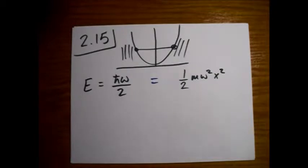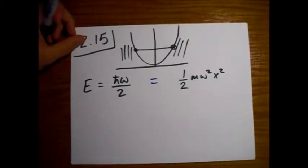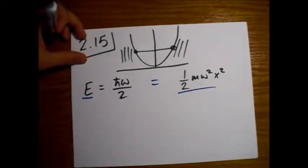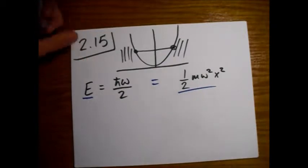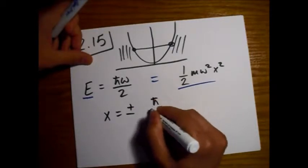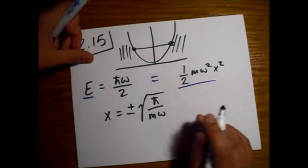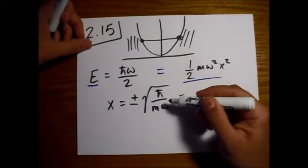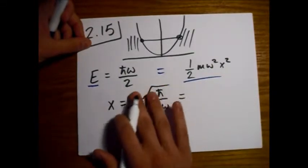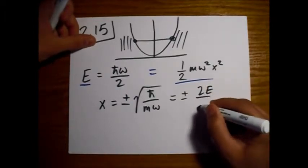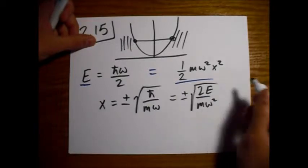The hint Griffiths gives us is to set E equal to the potential and solve for x. By equating the ground state energy to the potential, we get x equals plus or minus √(ℏ/mω). If you substitute E = ½ℏω, you get what Griffiths has, which is plus or minus √(2E/mω²).